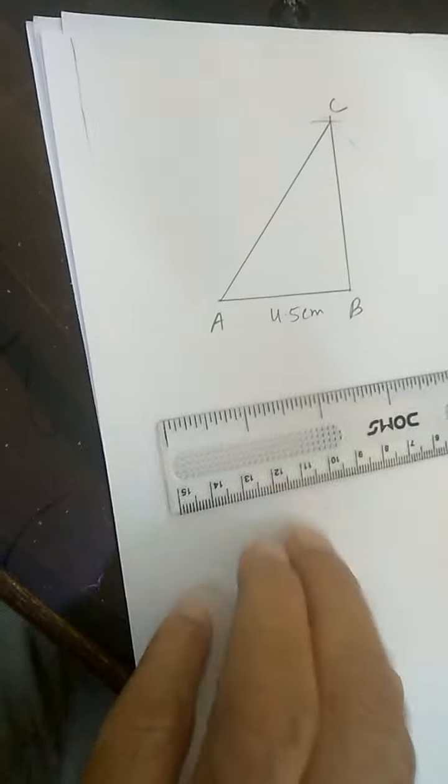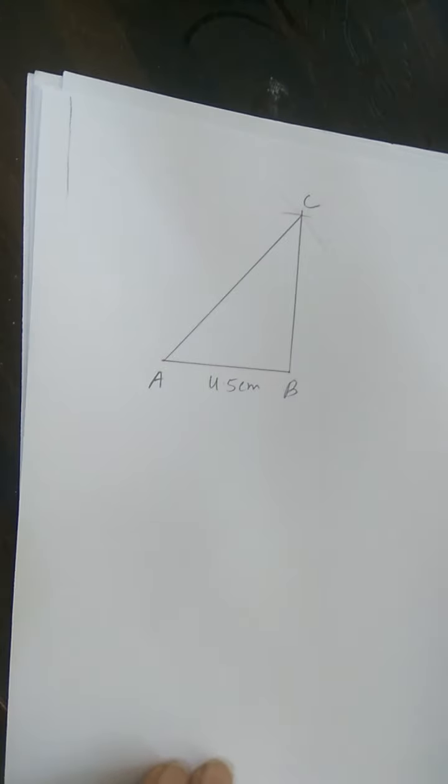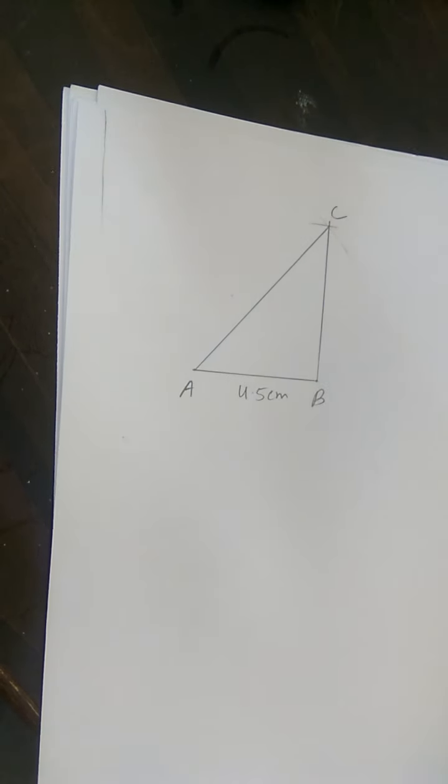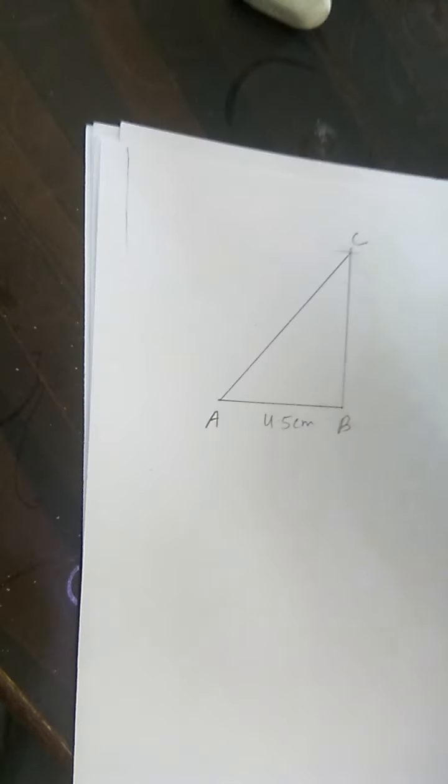So you have to join BC. See, we have already talked to construct a quadrilateral. Most of the time you will have to construct a triangle first. You got three vertices A, B, C.